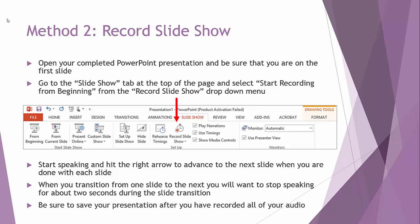Open your completed PowerPoint presentation and be sure that you're on the first slide. Go to the Slideshow tab at the top of the page and select 'Start Recording from Beginning' from the Record Slideshow drop-down menu. Start speaking after about three seconds and hit the right arrow or Enter button to advance to the next slide. When you transition between slides, pause your speaking for about two seconds for the slide transition to take place. Be sure to save your presentation after recording all of your audio.